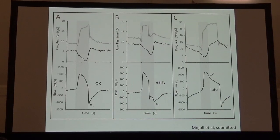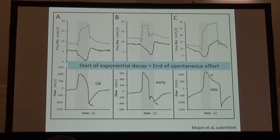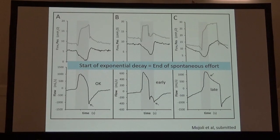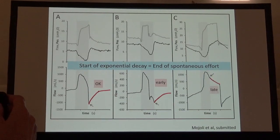On the other hand, a passive, exponentially decaying flow suggests passive condition. We can assume that the start of exponential decay in flow marks the end of a patient effort. Using this information, we can check whether the cycling off is at the right time, too early, or delayed.